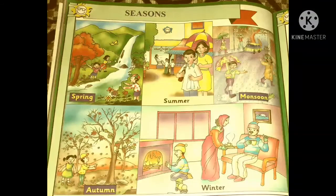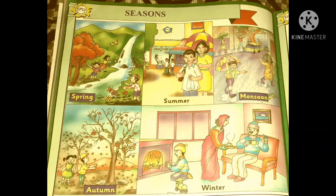In our country there are five seasons: Spring, Summer, Monsoon, Autumn, and Winter.